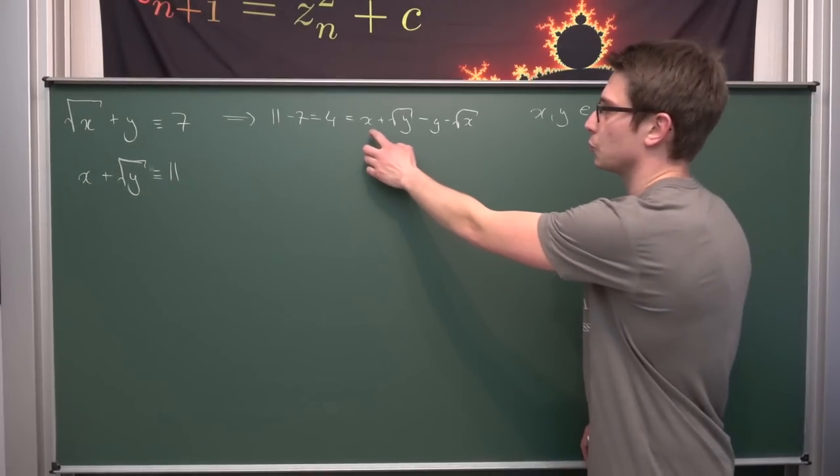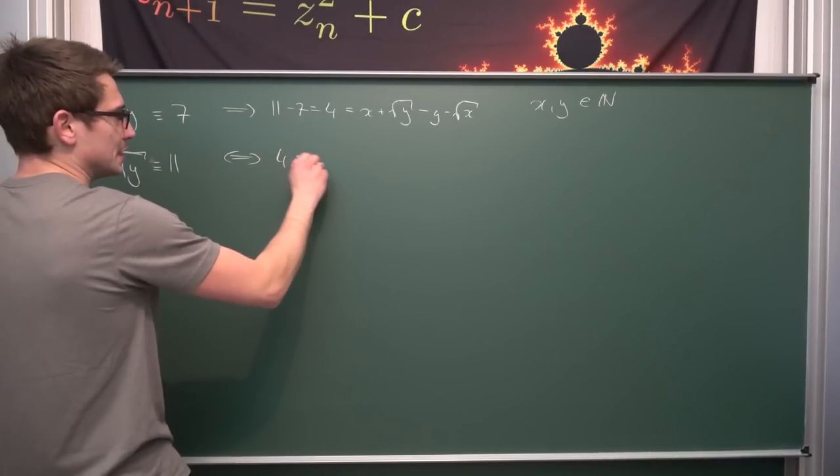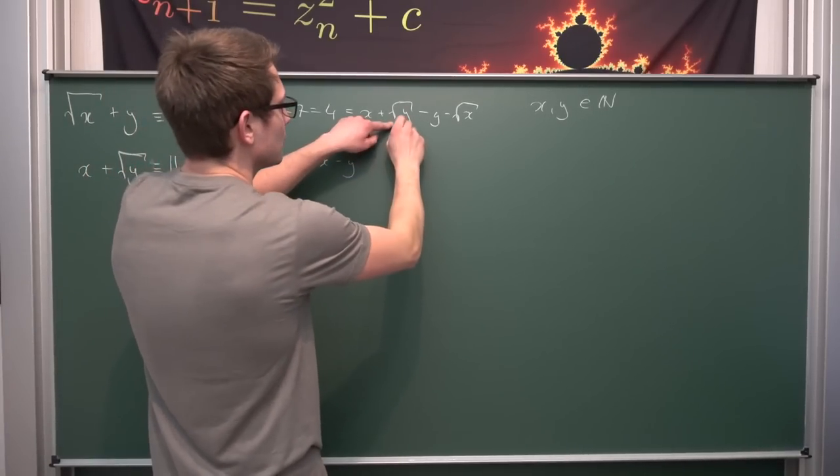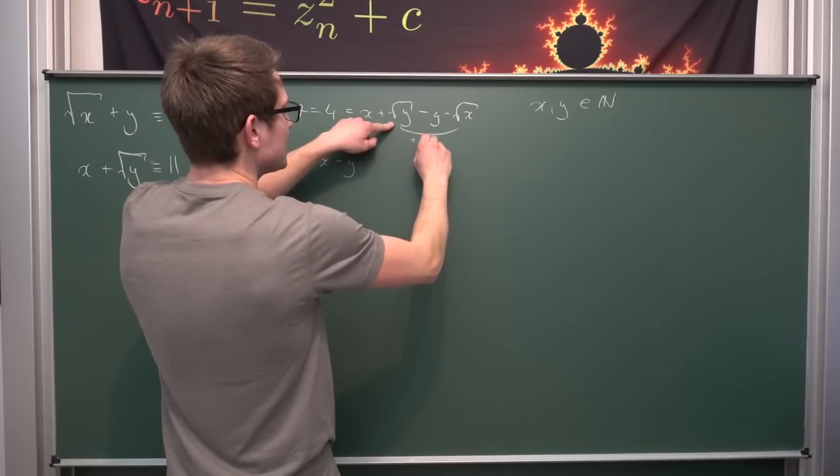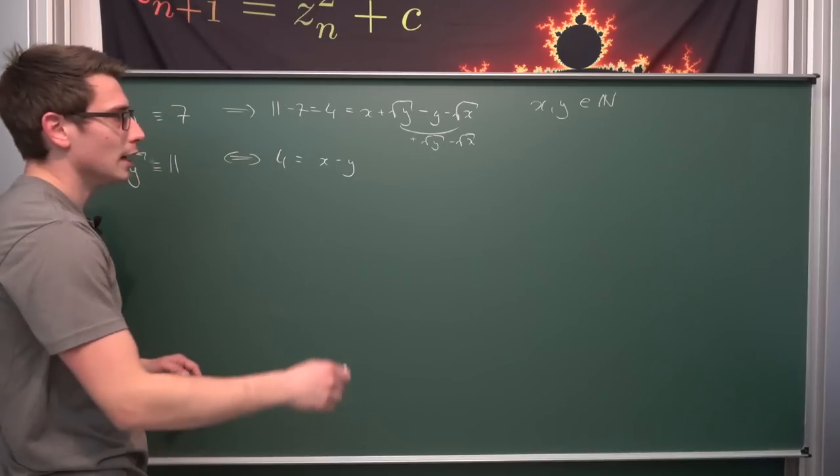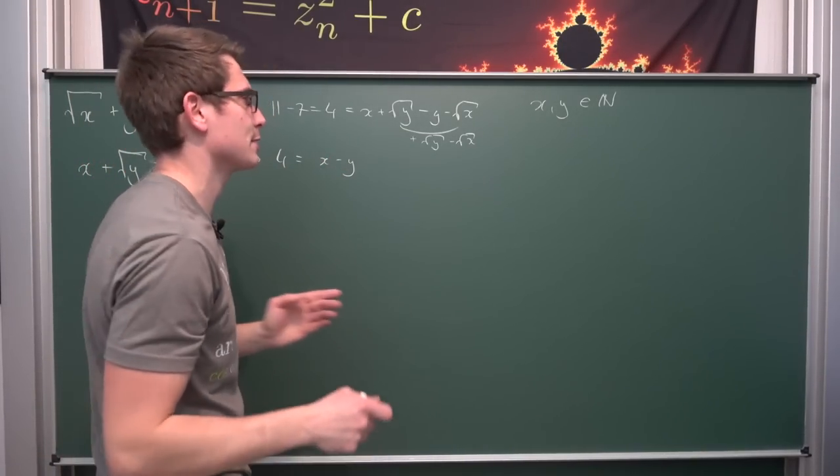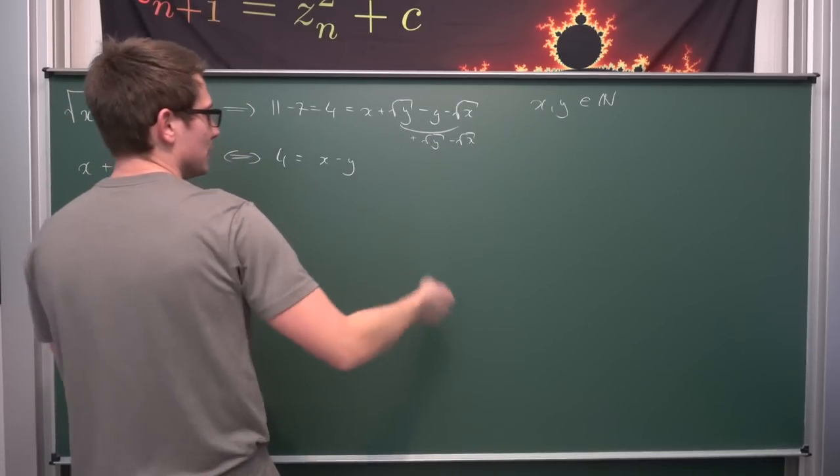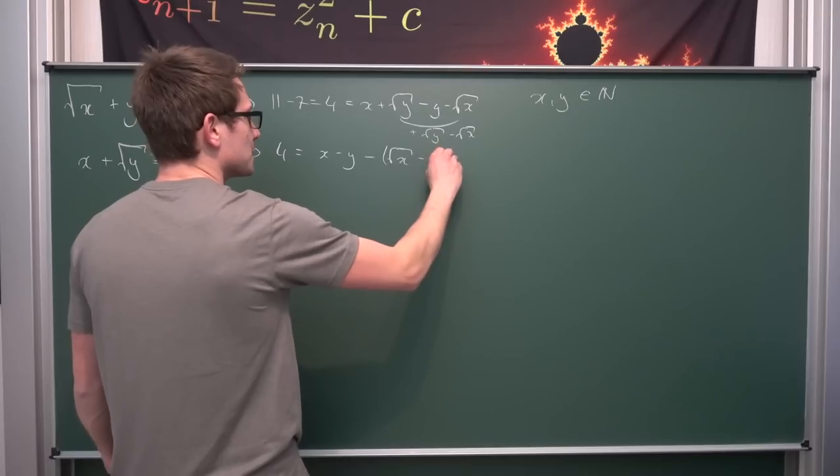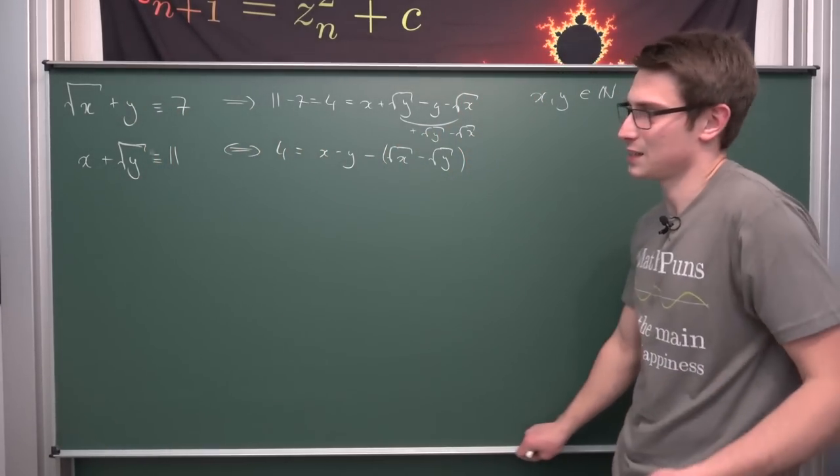Now we're going to bring things together, group them, and factor in a very sneaky way. We're going to bring x and y together, so 4 equals x minus y, plus square root of y minus square root of x. I want to bring it into the order something x minus something y, so we're going to factor out a negative sign: negative parenthesis square root of x minus square root of y. It's very nice, very elegant.